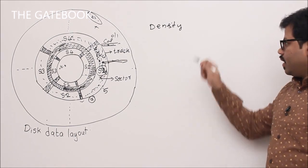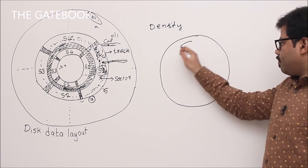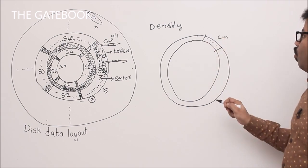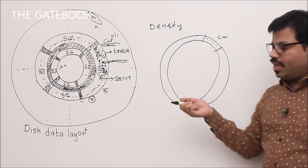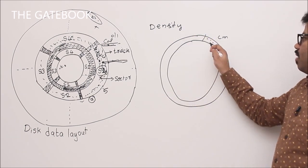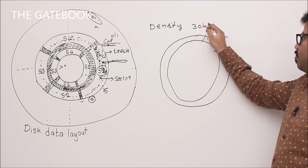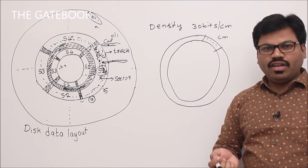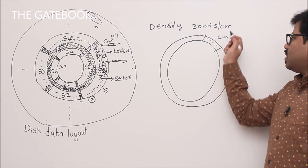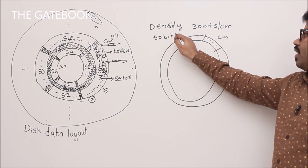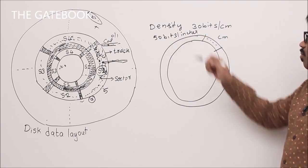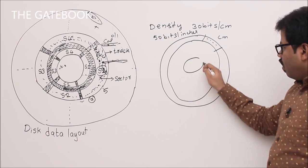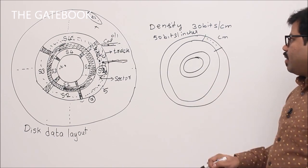Density is the amount of data you store per unit length. For example, in one centimeter of a track, how many bits can you store? If you store 30 bits per centimeter, the density is 30 bits per centimeter. It can also be measured in bits per inch — it is simply the number of bits per unit length.